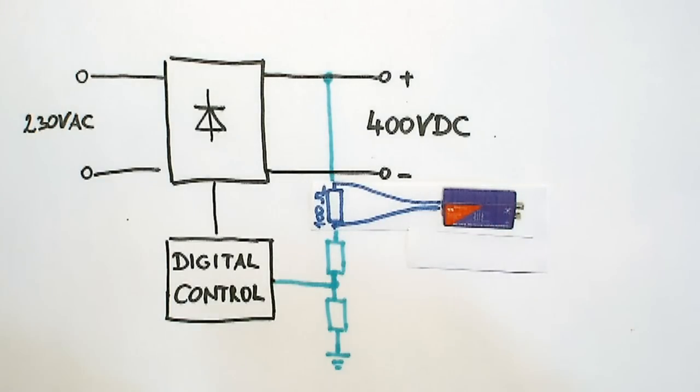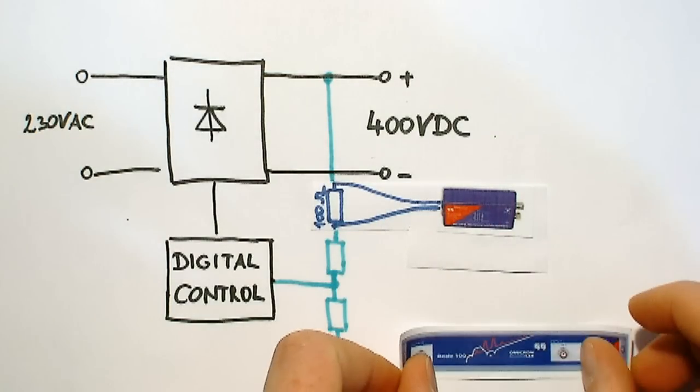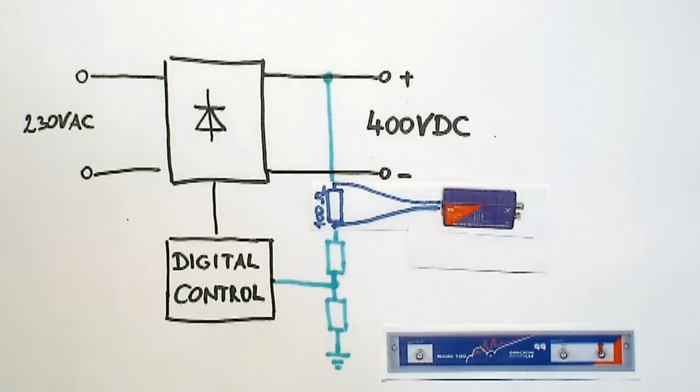The signal of the Bode 100 is then applied via the BVT injection transformer to enable ground free signal injection.